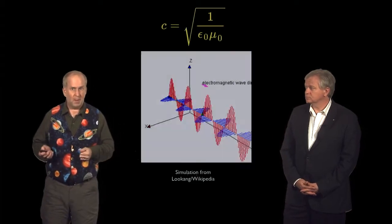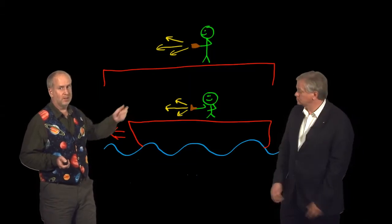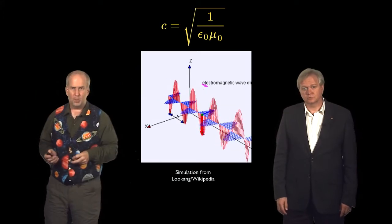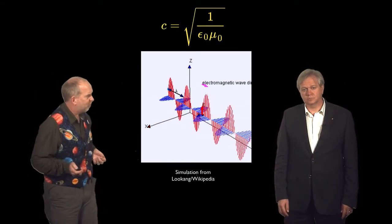So here's the problem. We've said that we can't tell if we're moving, there's no absolute frame of motion, but we have the speed of light that is always the same. Now, how do those two things conflict with each other?